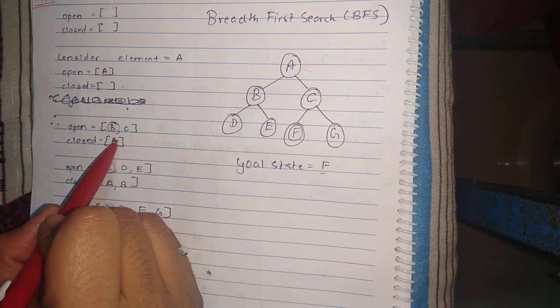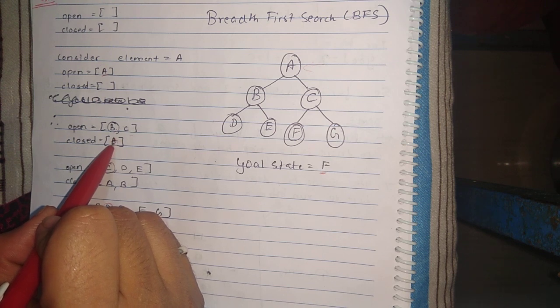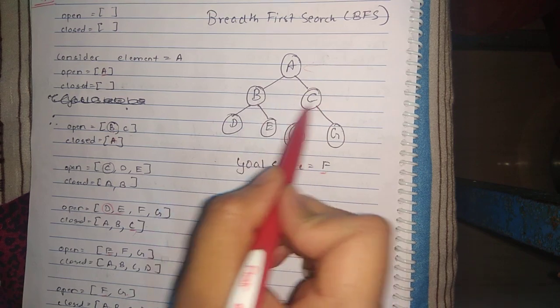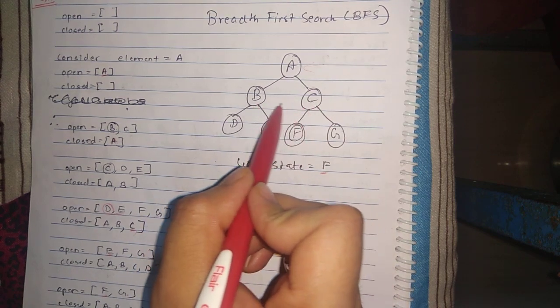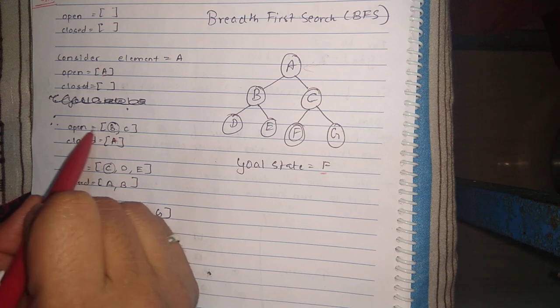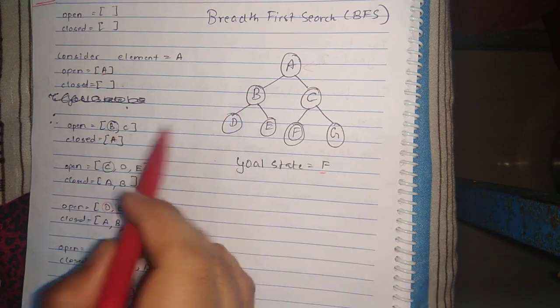Since A is not the goal state, we'll take A from here and place it in the closed array. Then we will consider children of A, which is B and C.